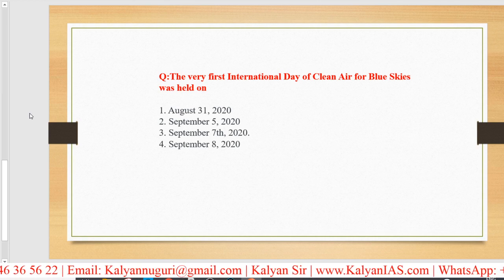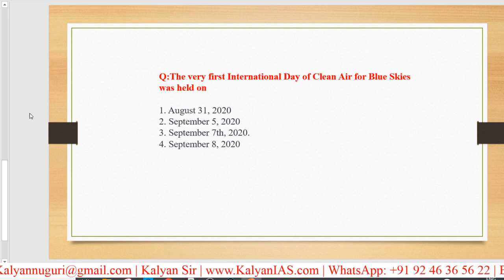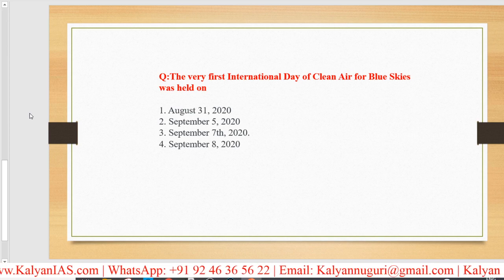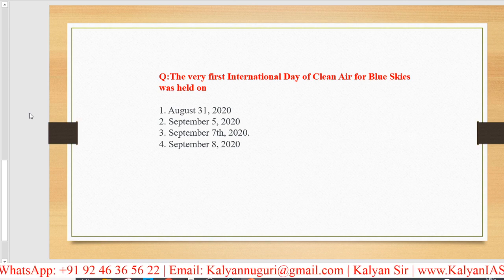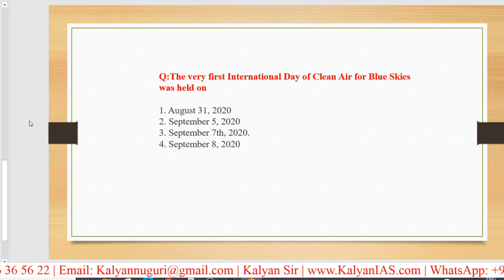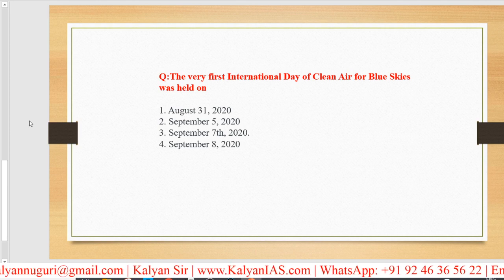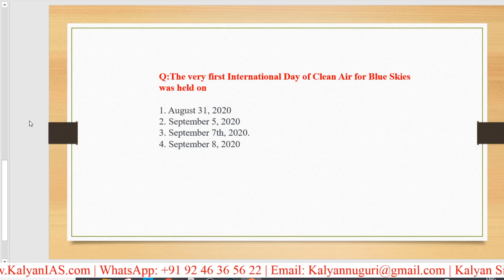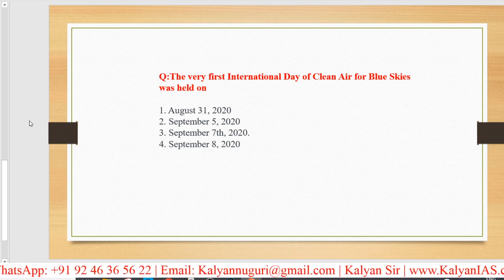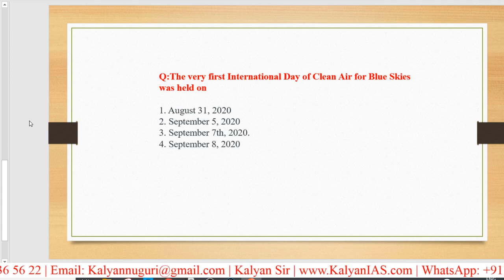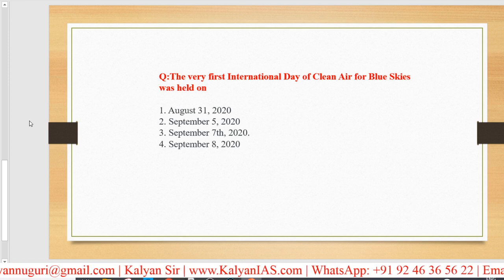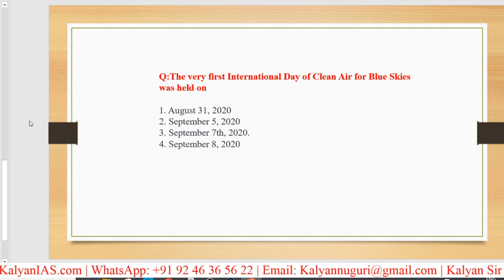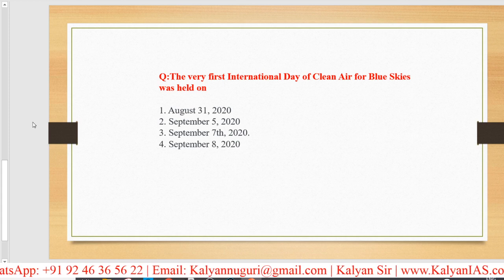The very first International Day of Clean Air for Blue Skies was held on September 7th. The levels of pollution are high even in many Indian cities — Delhi is considered to be the most polluted city in the world. There is a necessity for creating awareness for the reduction of pollution, which is the reason why this day is observed.